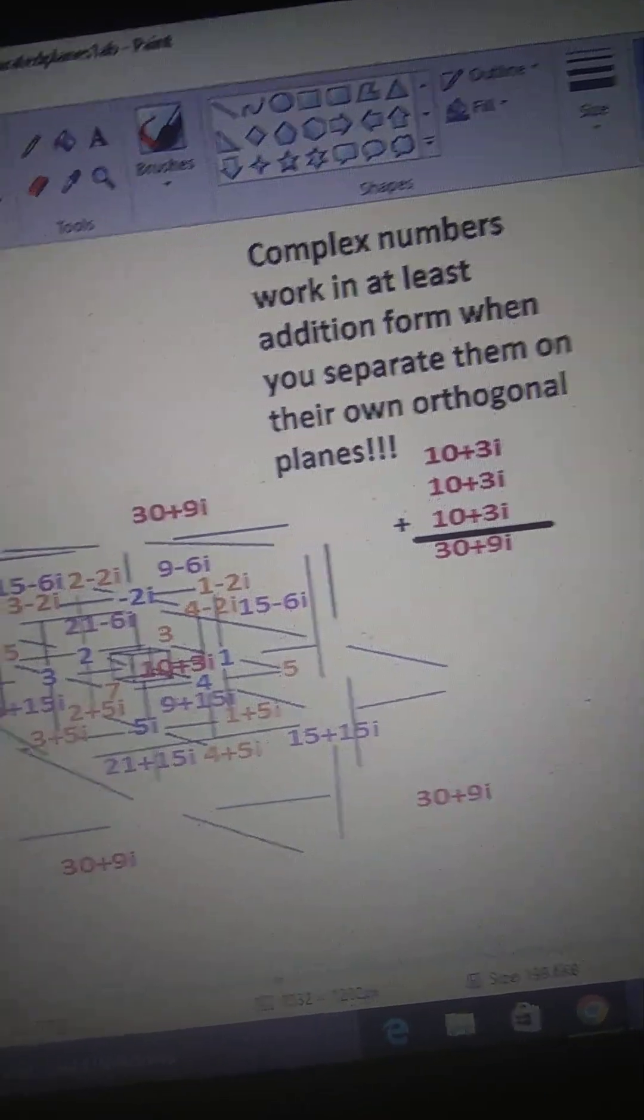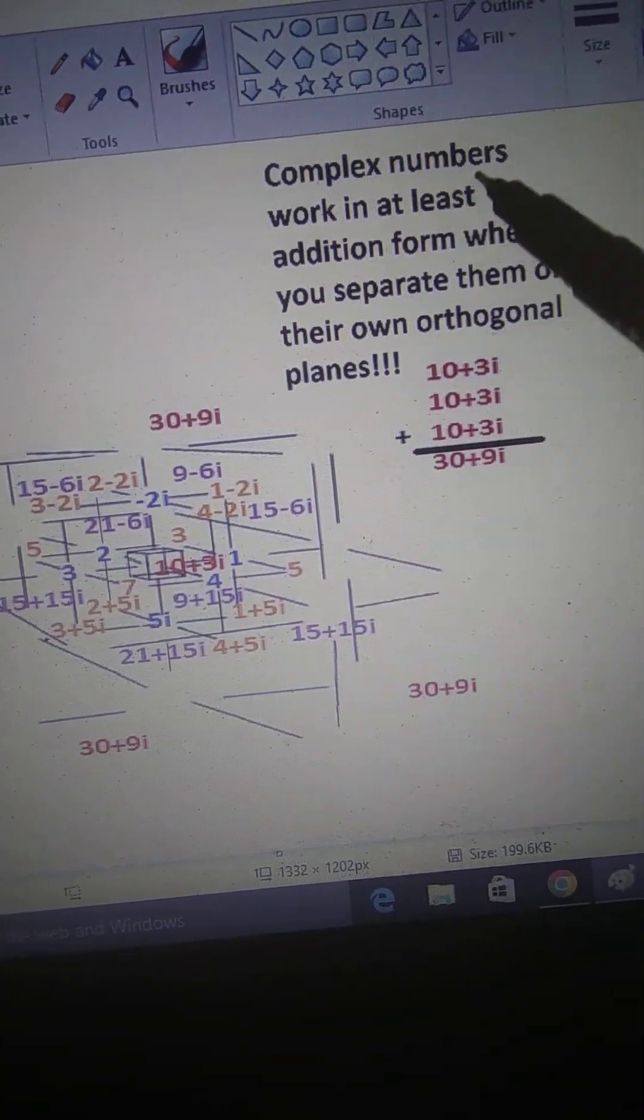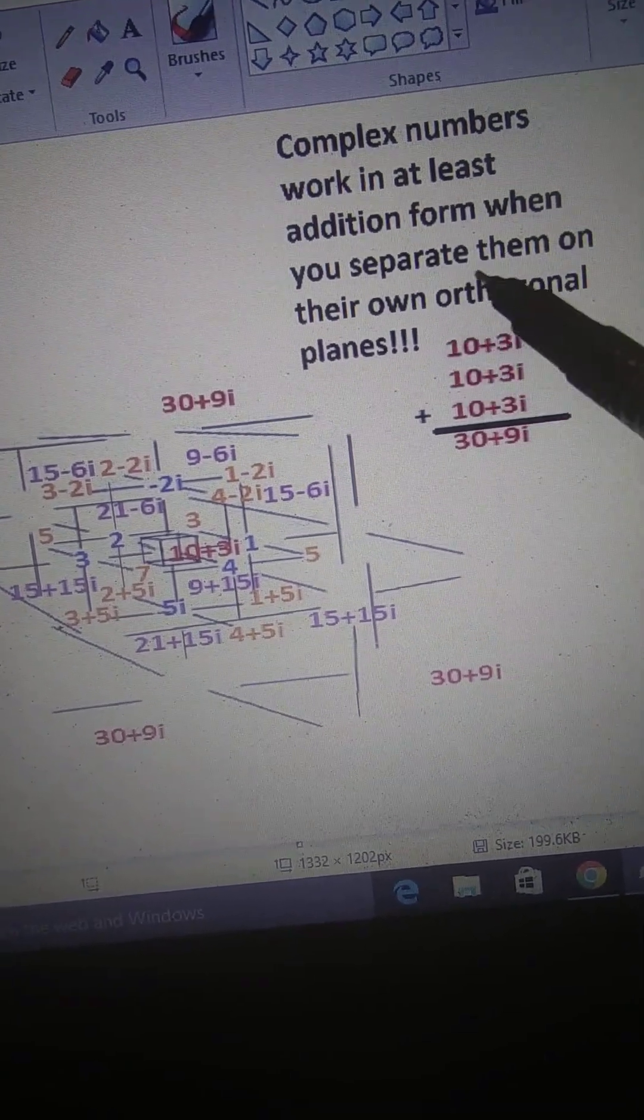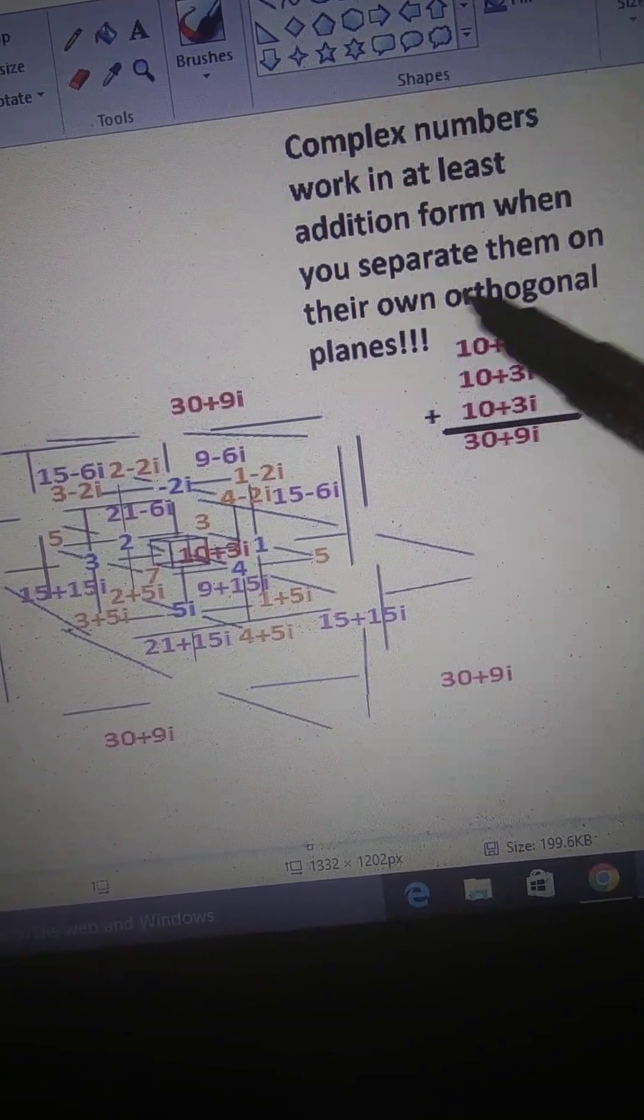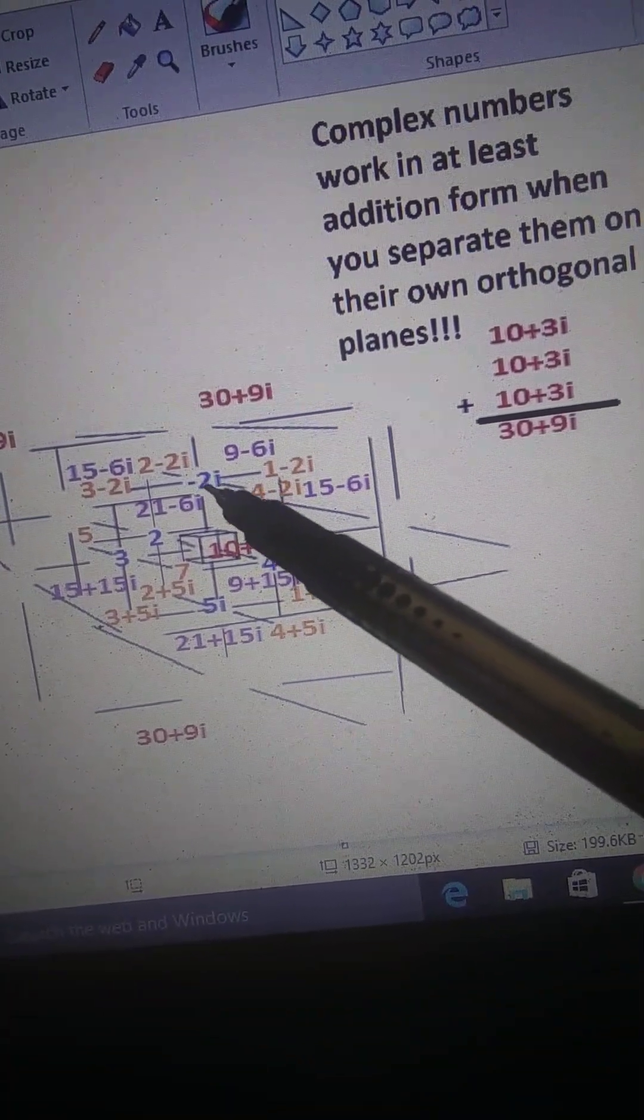I can't really use my cursor too well without screwing up, so this is what I have so far. Complex numbers work in at least addition form when you separate them onto their own orthogonal planes. The imaginary number line goes orthogonal to the real number line.